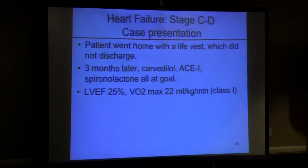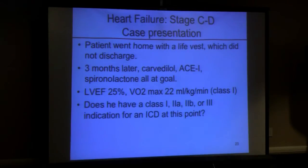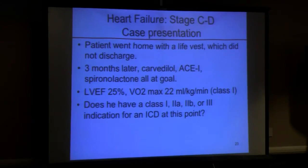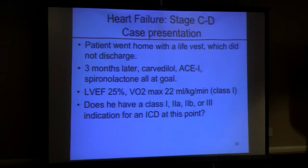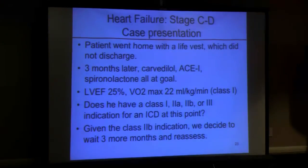We sent him home with a LifeVest because I was nervous sending him home with an EF of 20%. Three months later on goal-directed medical therapy, his EF was 25% and exercise VO2 max was excellent at class 1. So does he have a class 1, 2a, 2b, or class 3 indication for an ICD? The answer is 2b — asymptomatic LV dysfunction, non-ischemic. He's not completely reversed but potentially getting better, so we decided together to wait three more months.